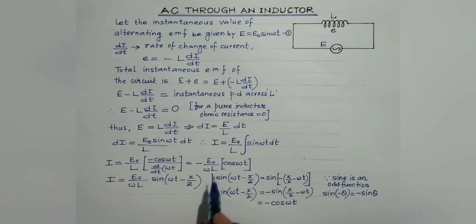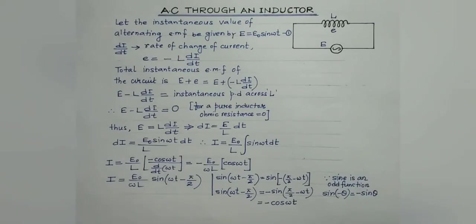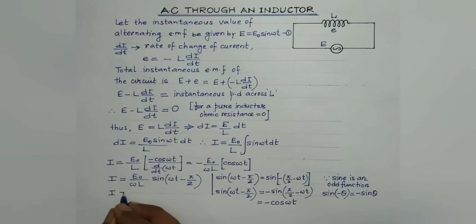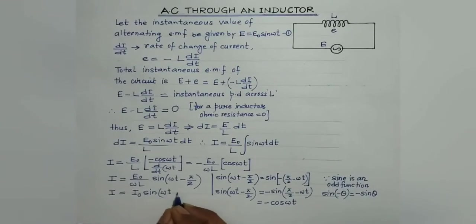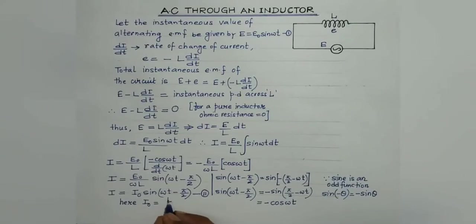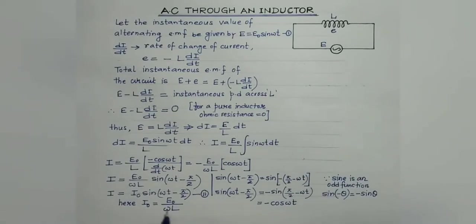This is a dimensionless quantity with a maximum value of 1, so the peak value of current is E₀/(ωL). Therefore, I equals I₀ sin(ωt minus π/2) — call this equation number 2. Here, I₀ is the peak value of current, which equals E₀ divided by ωL, the peak value of alternating EMF divided by ωL.